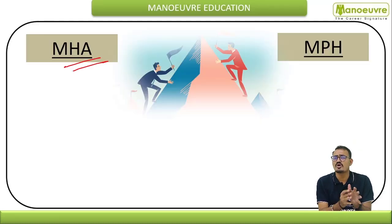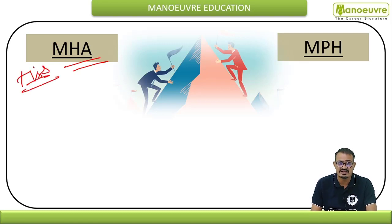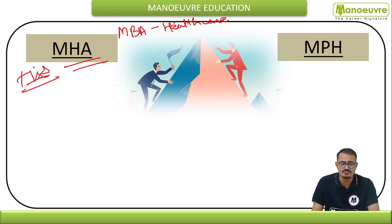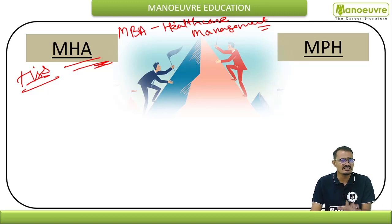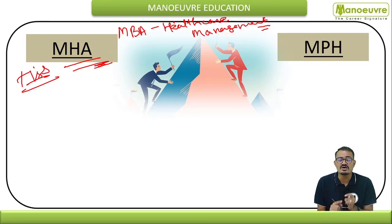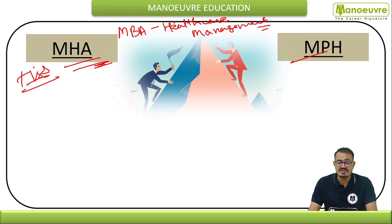The MHA — Master of Hospital Administration — is a well-known program at TISS and has gained a recognizable mark in the Indian market. Even among the many programs in hospital management and healthcare management, the MHA is recognized as one of the best in hospital administration. If you want to pursue the MHA program from TISS, you should have a keen interest in working in hospitals, knowing all departments, and understanding how a hospital runs — not just as an MBA graduate but as someone with deep hospital knowledge.